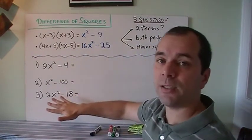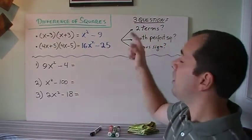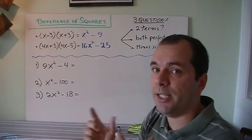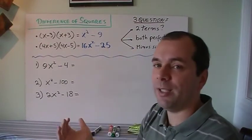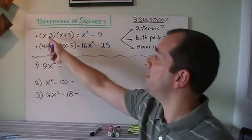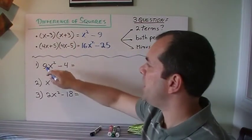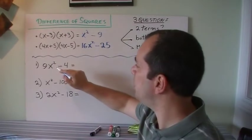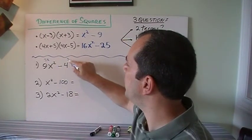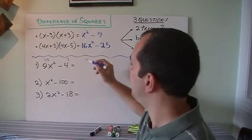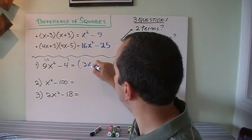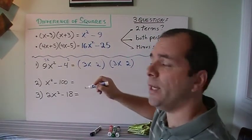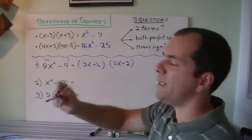When factoring, I ask myself three questions: Are there two terms? Are both of them perfect squares? Is there a minus sign? If all three answers are yes, the factoring is easy — just two brackets that look the same, one with a plus and one with a minus. For example, 9x² minus 4: two terms, yes; 9x² is (3x)² and 4 is 2², yes; minus sign, yes. Done — the answer is (3x+2)(3x-2).